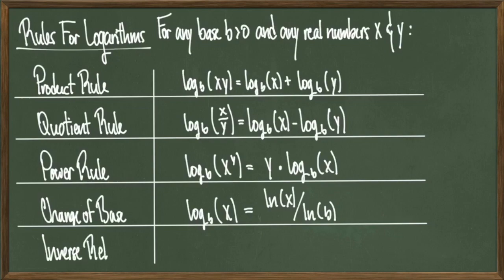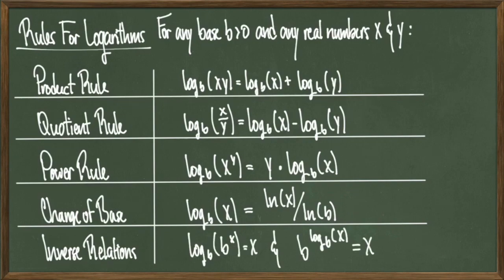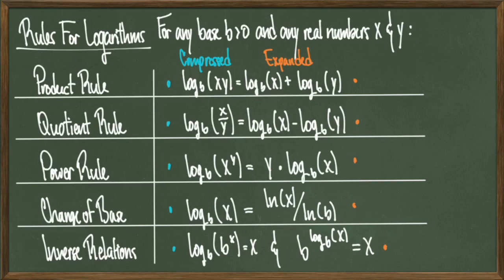And last we have inverse relations. Log base b of b to the x is just equal to x, and b raised to log base b of x is just equal to x as well. Loosely speaking, with a bit of abusive terminology, you can think of these like cancellation properties. Everything on the left-hand side can be considered as a compressed or simplified version, and everything on the right-hand side can be expressed as an expanded version or some difference in multiplication of logs.